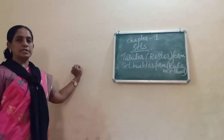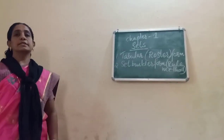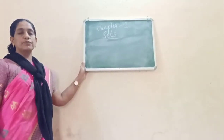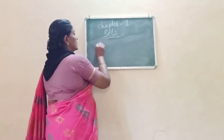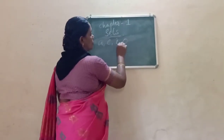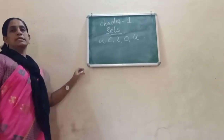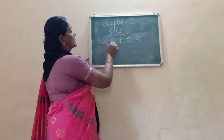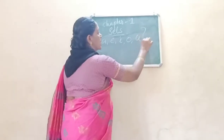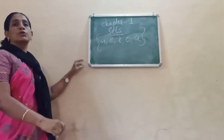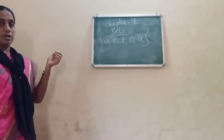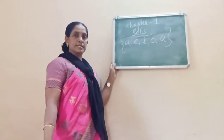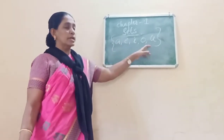What is tabular form? For example, the set of vowels in the English alphabet. The vowels are A, E, I, O, U. These vowels are listed and separated by commas, enclosed in curly brackets. This method is called roster form or tabular form. Tabular form is a form in which elements are listed and separated by commas, enclosed within curly brackets.